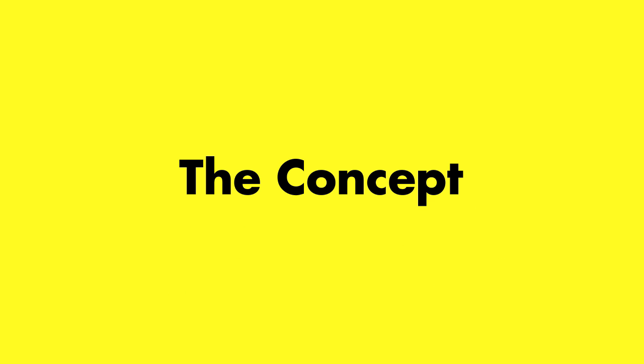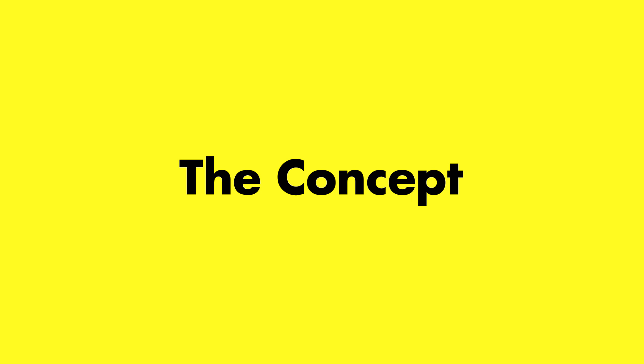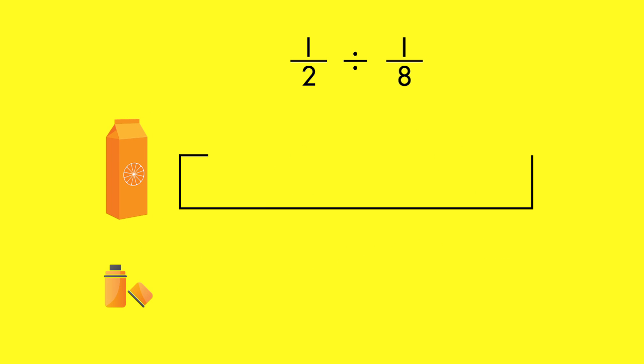When you divide a fraction by a fraction, you are seeing how many of one fraction can fit inside the other. Let's look at this juice problem using fraction bars.